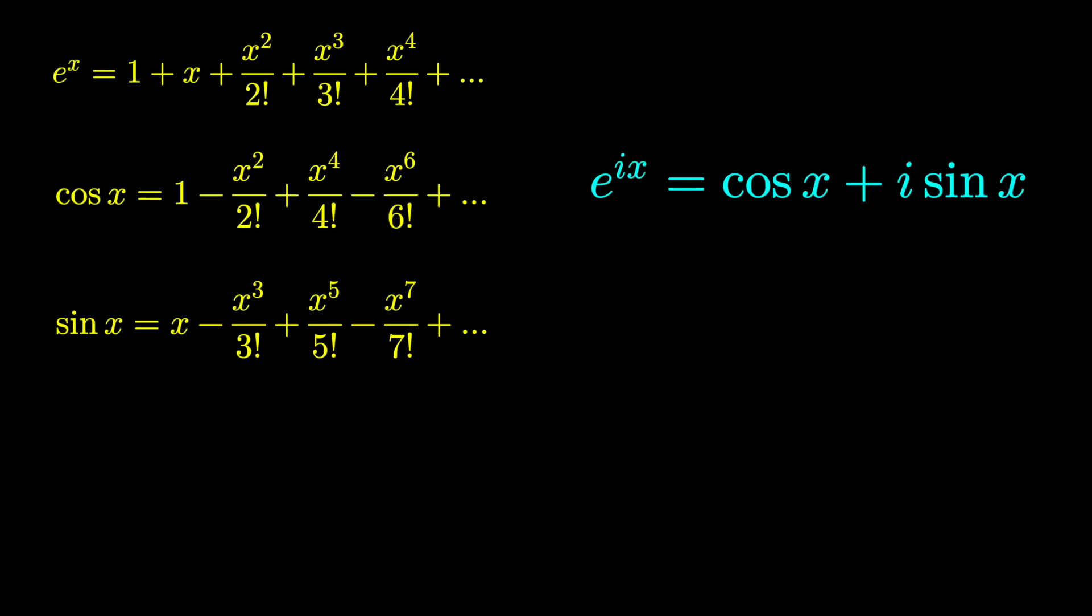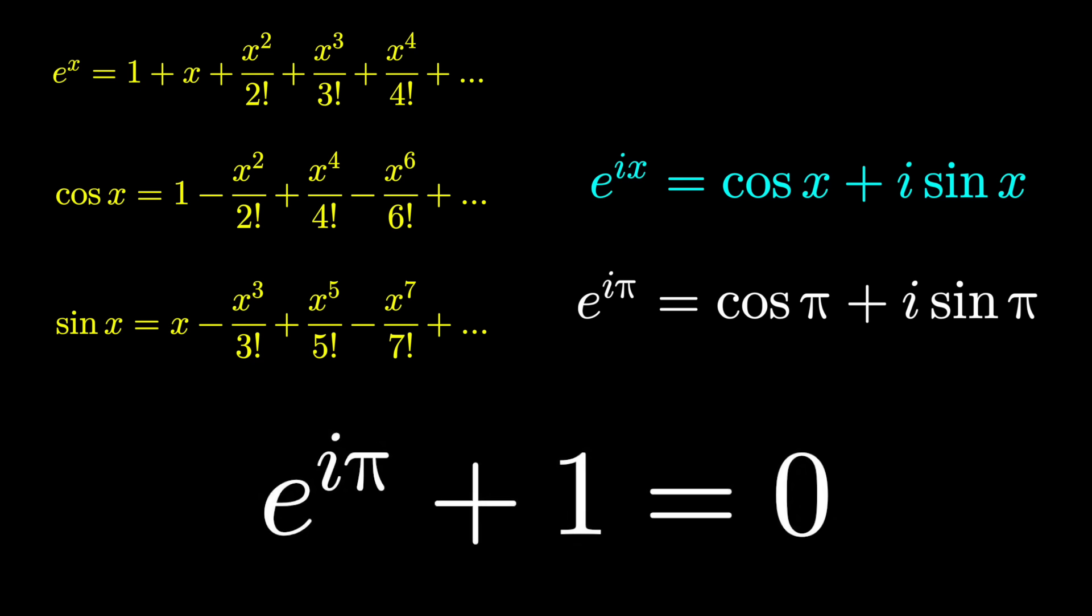The best part about it is plugging in pi. That means e to the i pi equals cosine pi plus i sine pi. Cosine of pi is negative 1. Sine of pi is 0. And you can rewrite this as e to the i pi plus 1 equals 0.